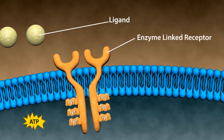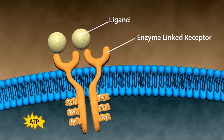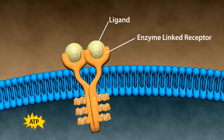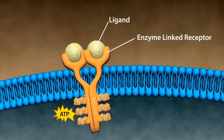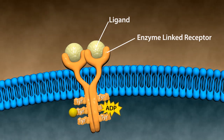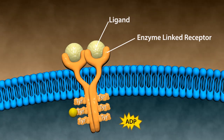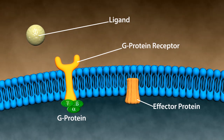In enzyme-linked receptors, the transmembrane protein of the receptor are enzymes, or closely associated with an enzyme. For example, tyrosine kinase receptor. The binding of the ligand induces dimerization of the receptor, which activates its tyrosine kinase activity through autophosphorylation and phosphorylates other intracellular enzymes sequentially. The phosphorylation status of the enzyme may result in activation or inactivation, resulting in various cellular responses.